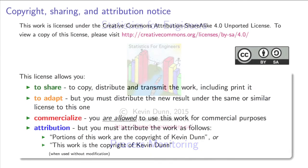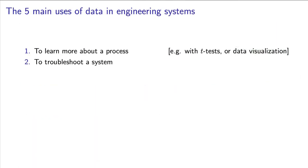We have learnt in this course that data can be used for several objectives. The first is simply just to learn about your process and understand what is going on. For example, in the section on t-tests, we learnt how to verify whether changes to our process are actually significant or not. We can also learn by observing trends in data visualizations, to troubleshoot problems, and so forth.